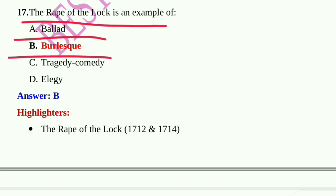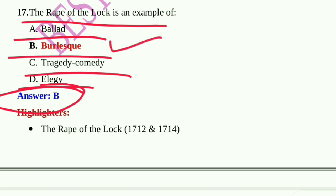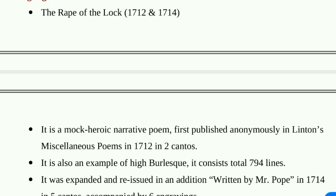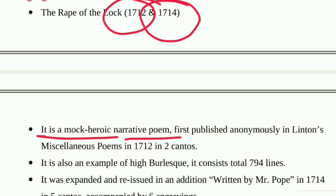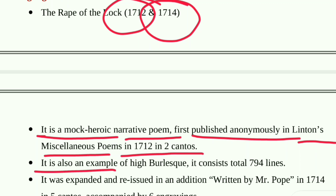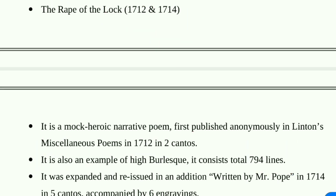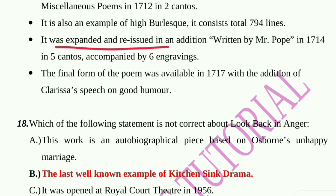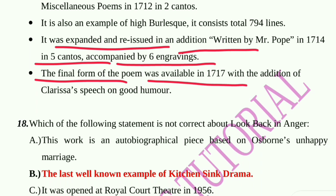Question number 17: The Rape of the Lock is an example of — a ballad, burlesque, tragedy, comedy, or elegy? Option B, burlesque, is correct. The Rape of the Lock was written between 1712 and 1714. It is a mock-heroic narrative poem, first published anonymously in Lintot's Miscellaneous Poems in 1712 in two cantos. It is an example of high burlesque, consisting of a total of 794 lines. It was expanded and reissued in 1714 in five cantos, and the final form was available in 1717 with the addition of Clarissa's speech on good humor.